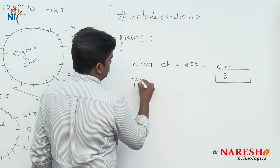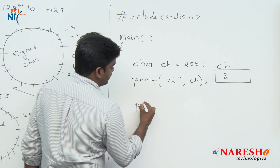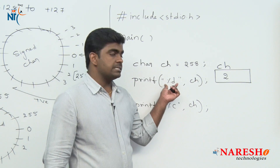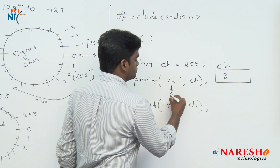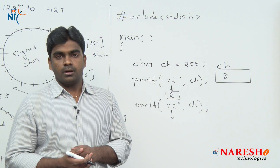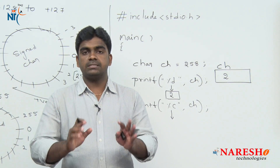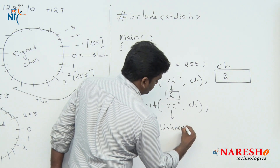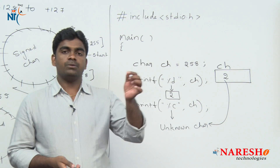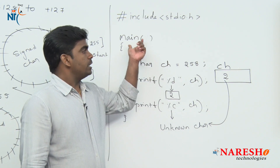When we print with %d it will easily print the value 2. When printing with %c, we do not know what character that will be — some unexpected or garbage character will print. That is the ASCII character corresponding to value 2, which is an unknown character. This is a tricky question they will ask in interviews about the character data type.